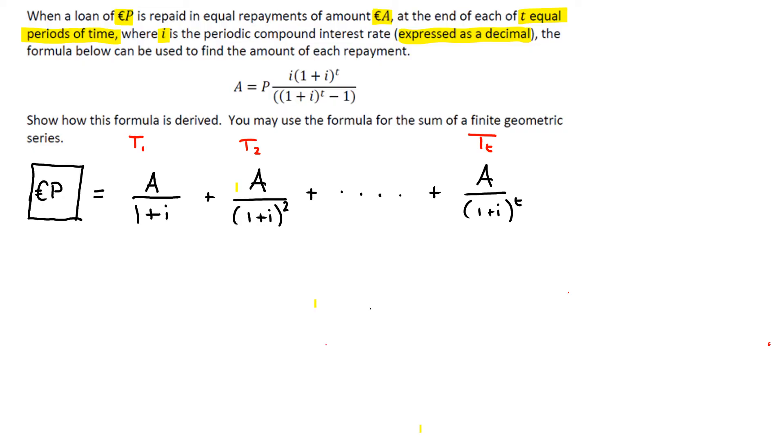So to figure out how do we jump from one to the other, we're multiplying it by 1 over 1 plus I. So that will be our R, our common ratio for the geometric series.